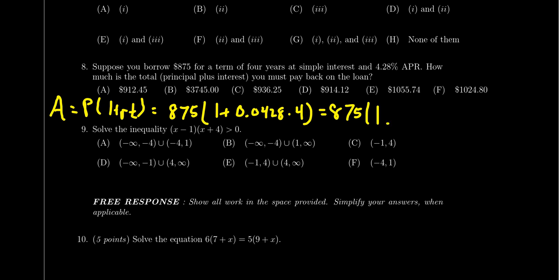So that will just add with the one. So we get the 1.1712 right there. And so then we need to times that by the $875. And we end up with $1024.80. So we see the correct answer would be F. So this is just a basic application of simple interest.